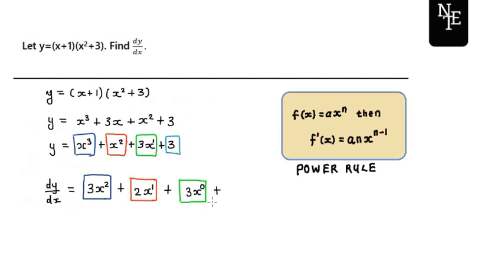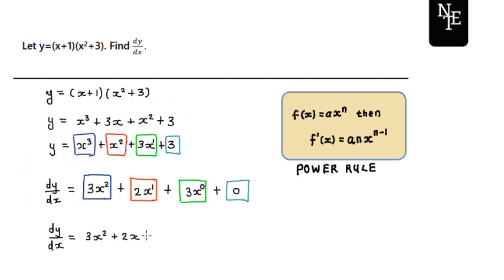For the last term here in sky blue, that is a constant term. We saw in the first video that the derivative of a constant term is equal to 0. So now simplifying, we have that the derivative dy by dx is given by the expression 3x squared plus 2x plus 3, because we know that x to the exponent of 0 is equal to 1, so over here what you have is just 3 times 1, which is 3. And that's it.